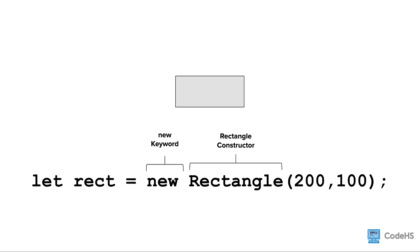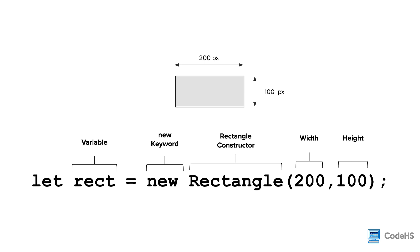For a rectangle, we pass two arguments. First, we pass the width of the rectangle, and second, we pass the height of the rectangle. And to be able to refer to the rectangle, we will store it in a variable.